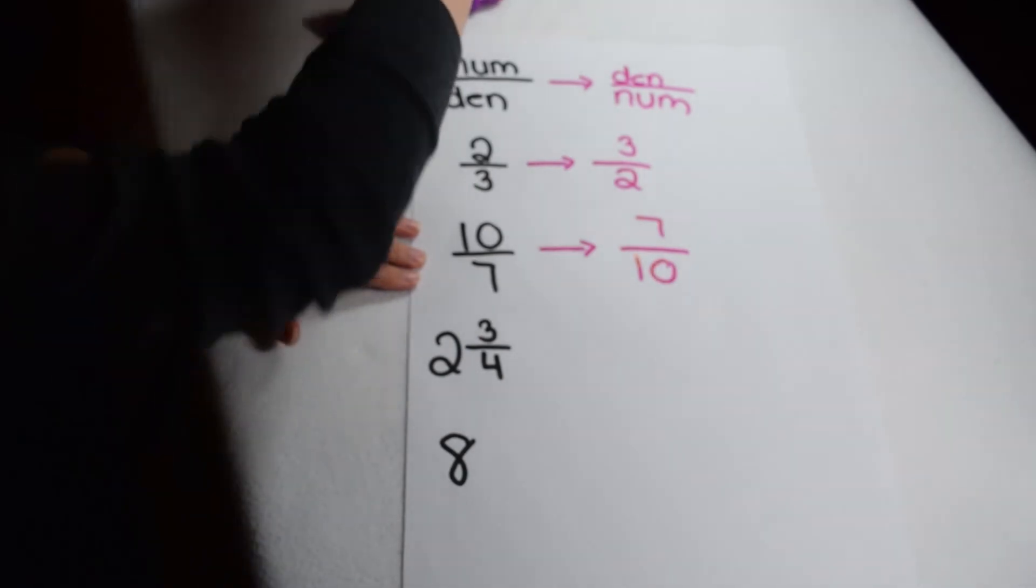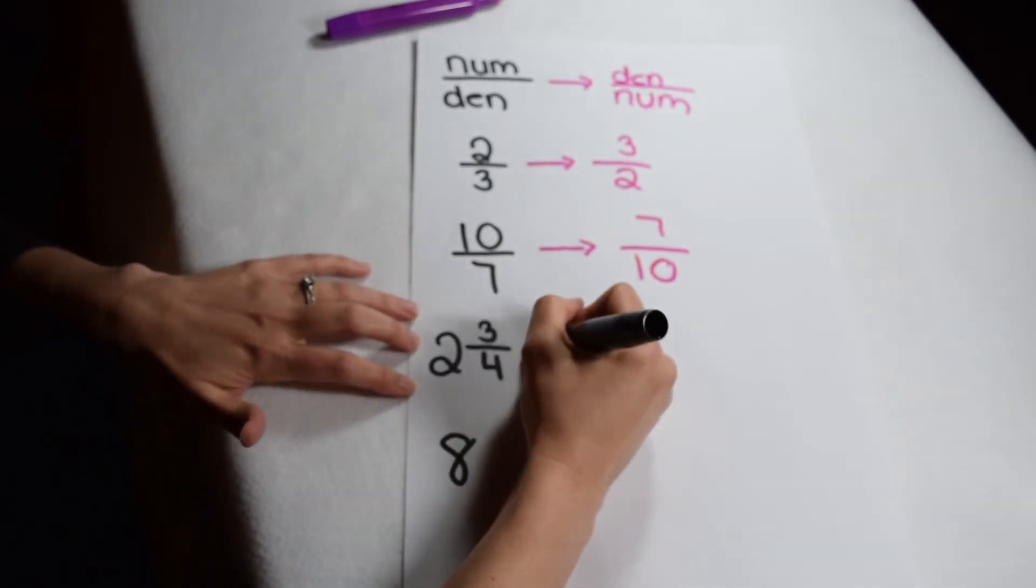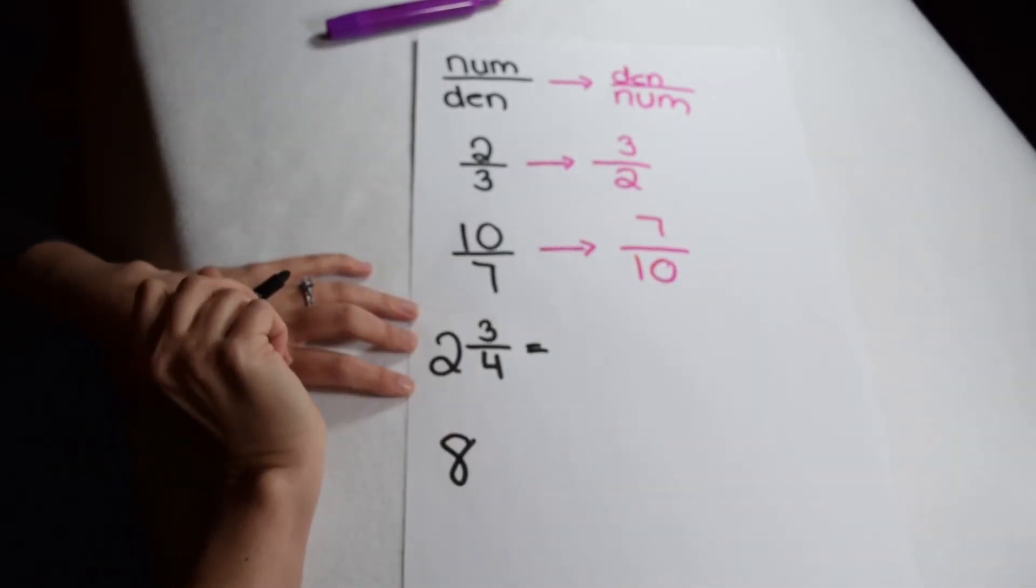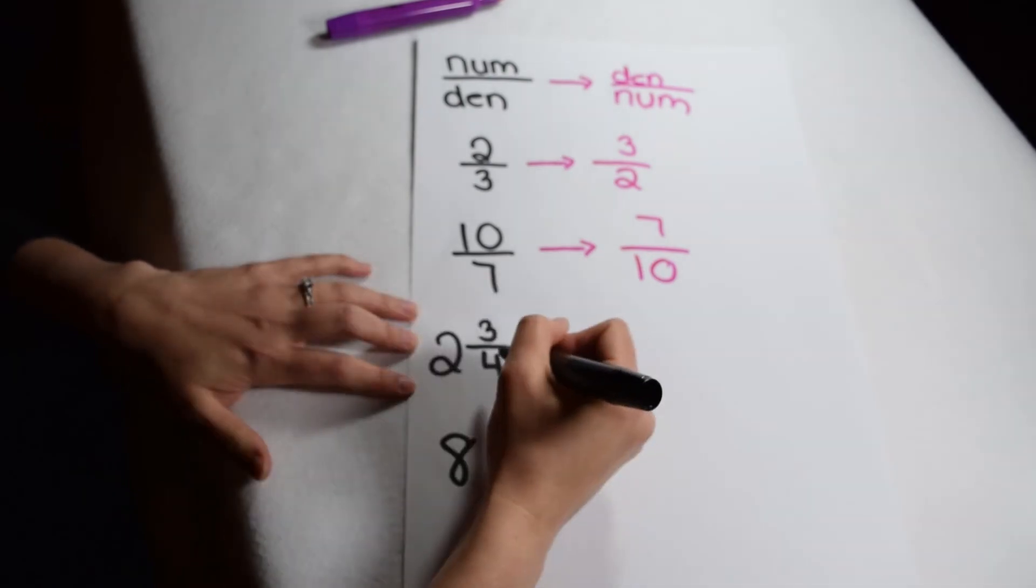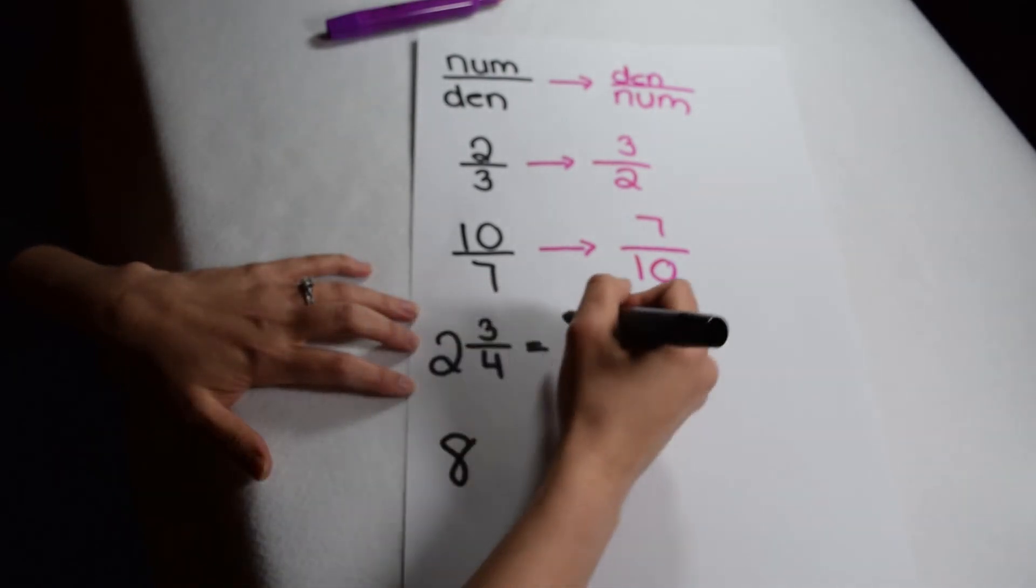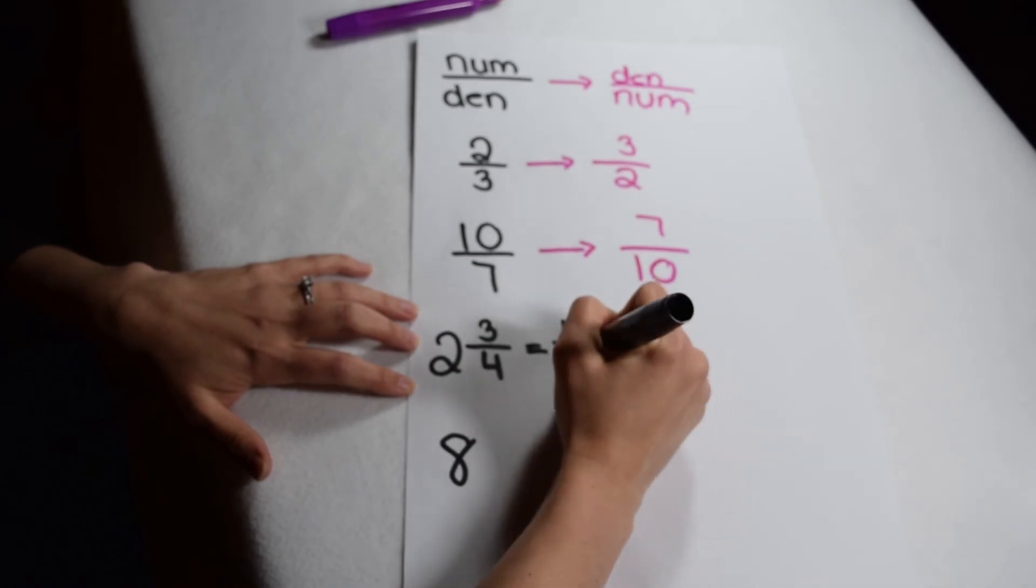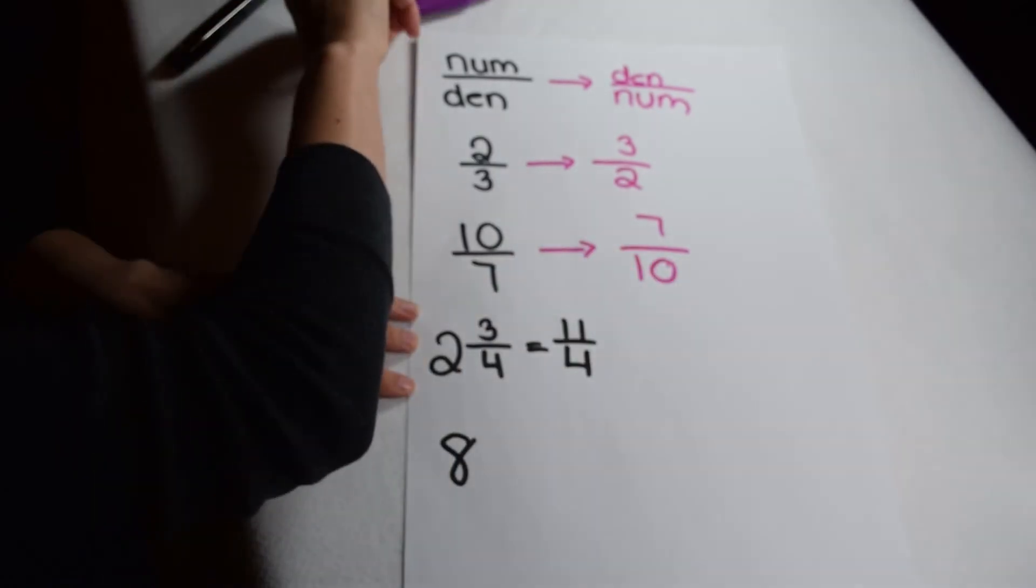If we have a mixed number, however, we first have to turn it into an improper fraction before we can take its reciprocal. So with 2 and 3/4, 4 times 2 gives me 8, 8 plus 3 gives me 11, it would be 11/4 that I could take the reciprocal of.